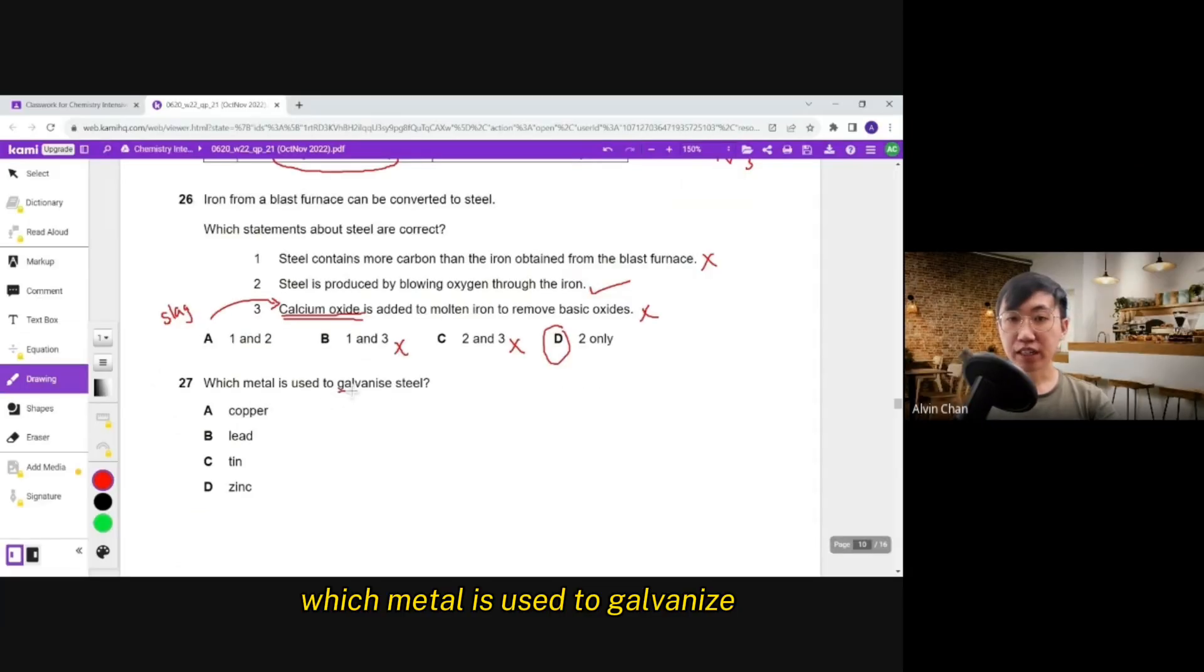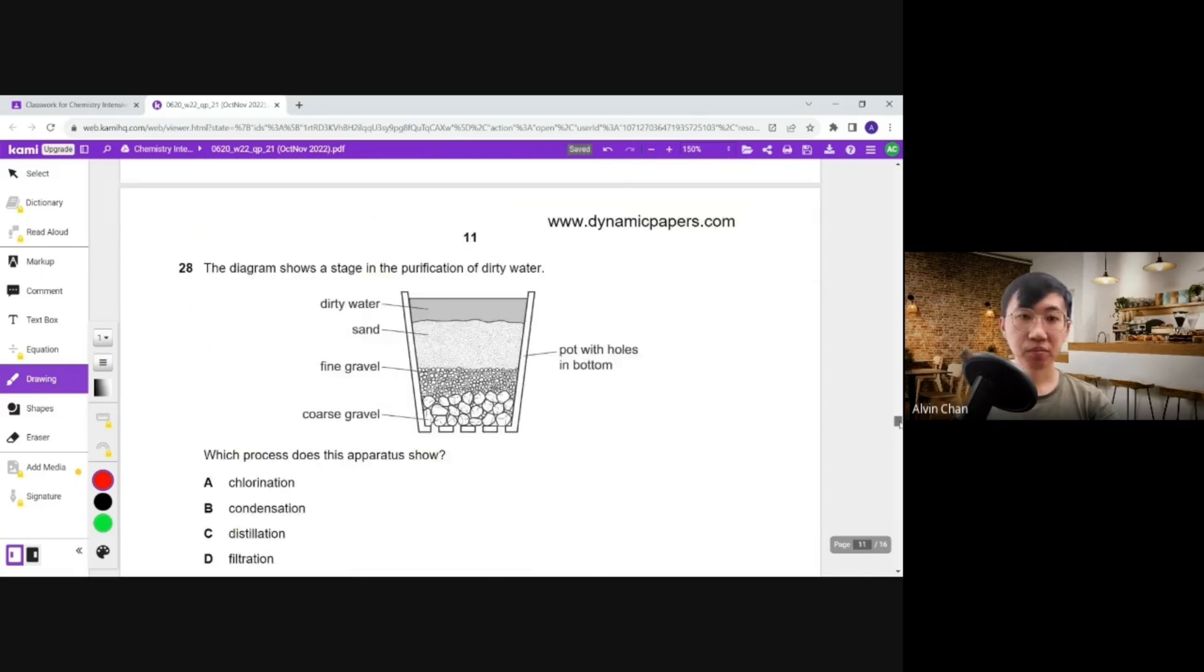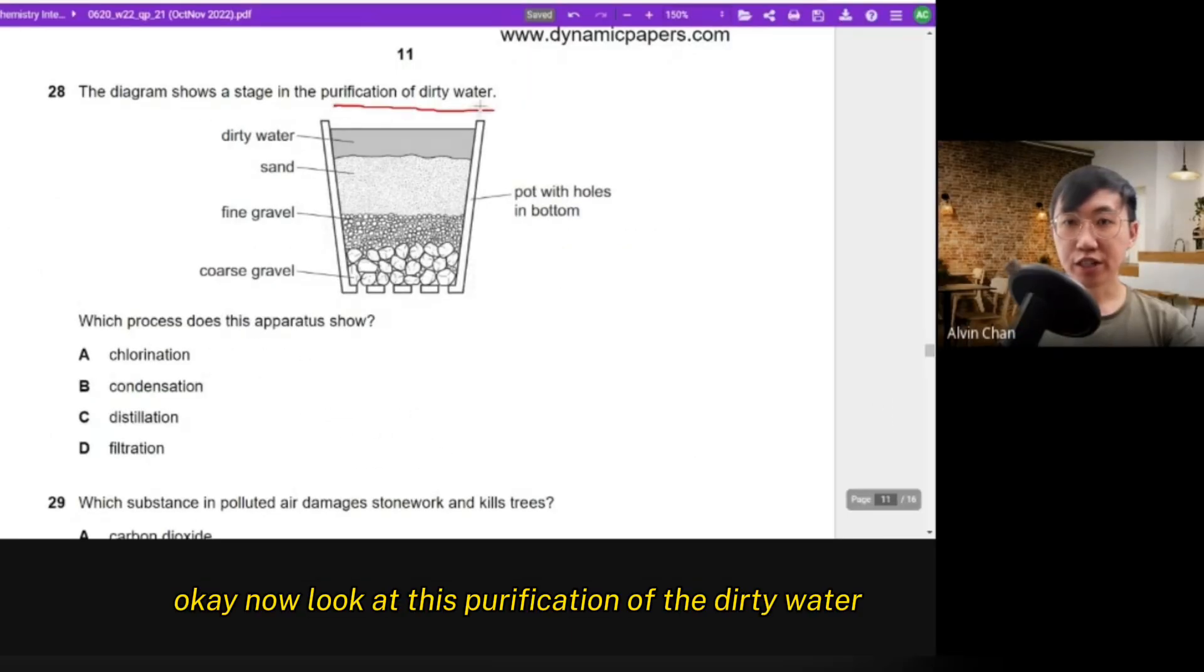Which metal is used to galvanize? See the keyword go for zinc. Done. Galvanization is zinc. Okay. Now look at this purification of dirty water. You have different sand, different structure, different stone. What does this process shows? Filtration. Done. One second thing.